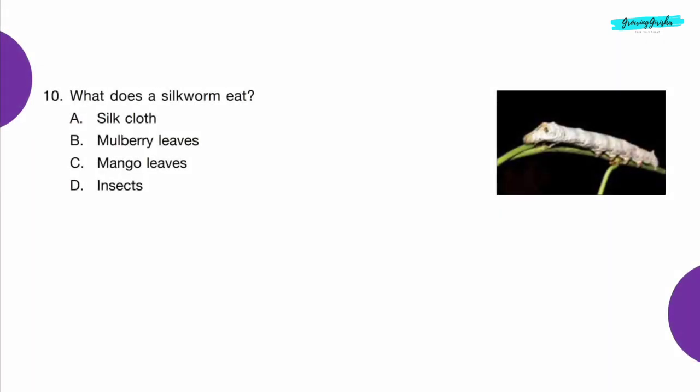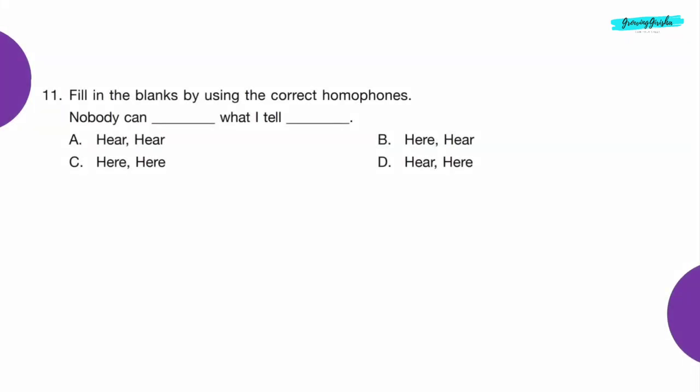Question 10: What does a silkworm eat? Option B — Mulberry leaves.